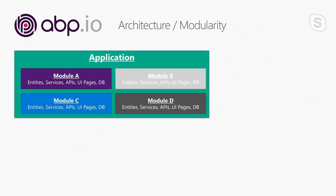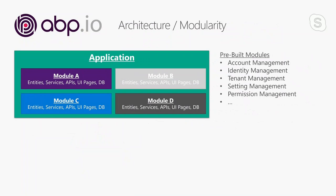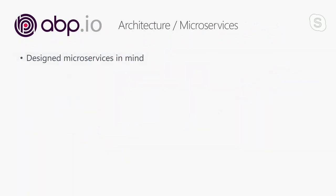ABP framework is designed to create fully modular applications. It provides infrastructure to distribute your entities, services, APIs, UI components, and pages into isolated modules at development time and bring them together to act as a single application at runtime. We have already created pre-built modules like account management, identity management, and tenant management — those are ready to use in your application. Documentation and guides help you in building your own modules.